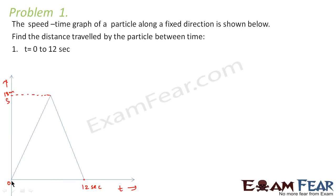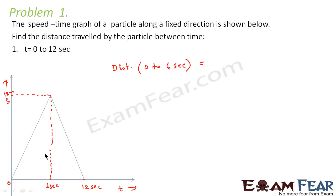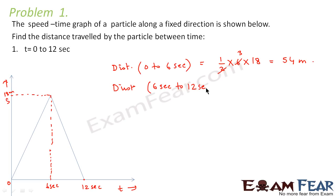We will first calculate the distance travelled from 0 to 6 seconds. The distance travelled from 0 to 6 seconds would become the area of this triangle — that is half into base into height, which is equal to 54 meters. Now the distance travelled from 6 to 12 seconds will again be the area of a triangle — half into base into height. Here the base would also be 6, so this will again be 54 meters.